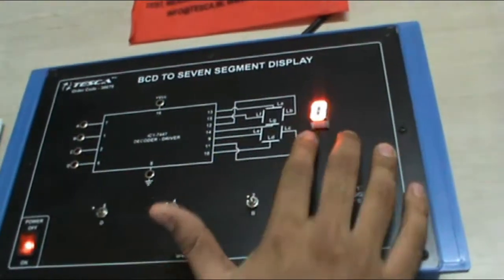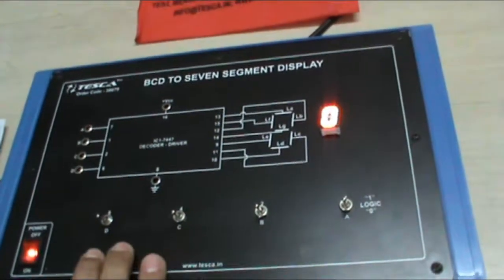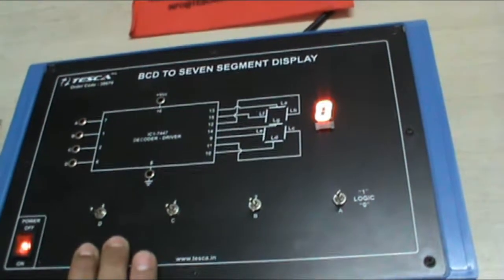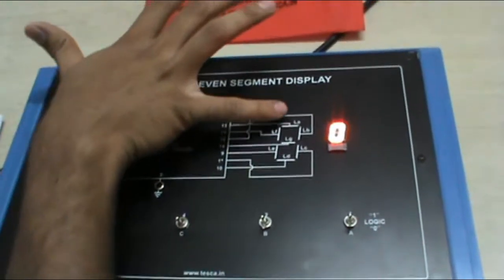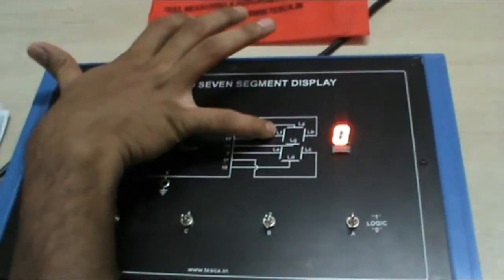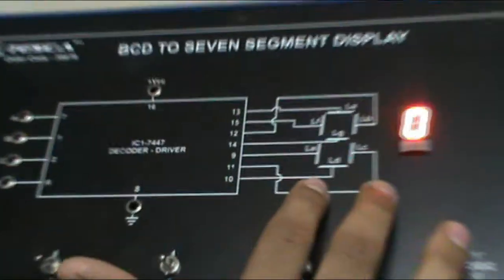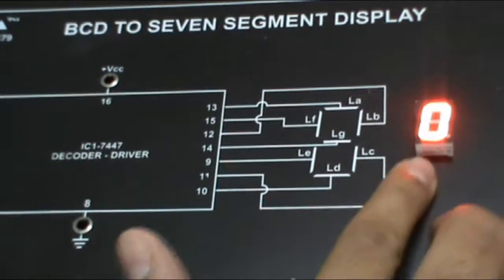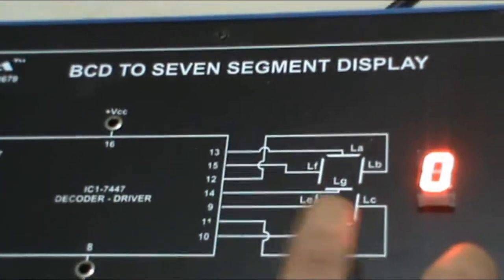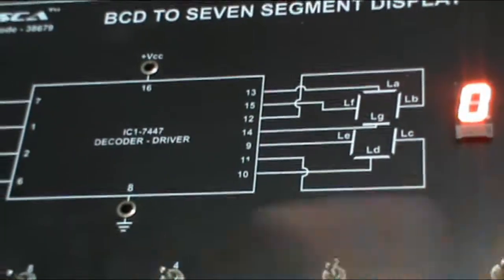Now to display 0, all inputs A, B, C, D are 0. But all segments a to f in the 7 segment display are 1. Only segment G is 0. This combination shows 0 on the 7 segment display.